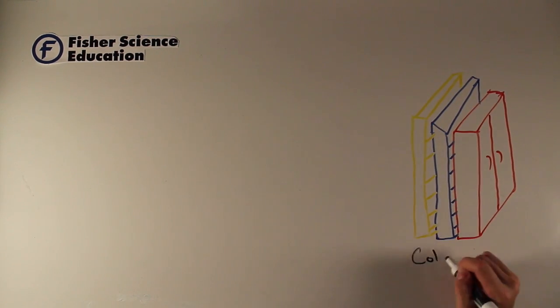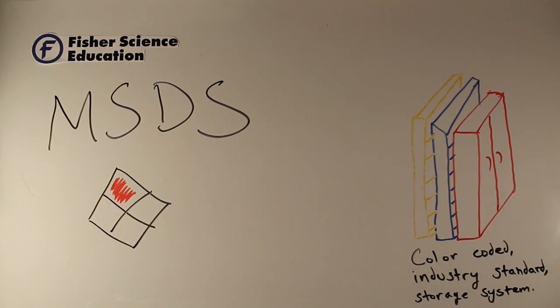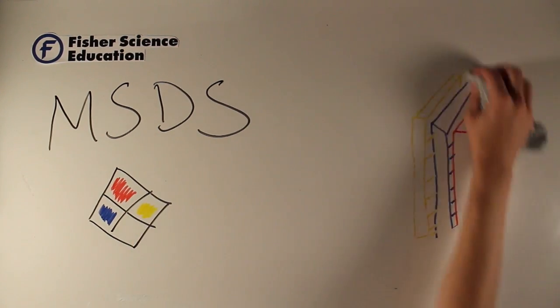Ava will tell you right from your inventory list where you should store your chemicals based off of a color code. You have instant access to the material safety data sheets of all Fisher Science Education chemicals.